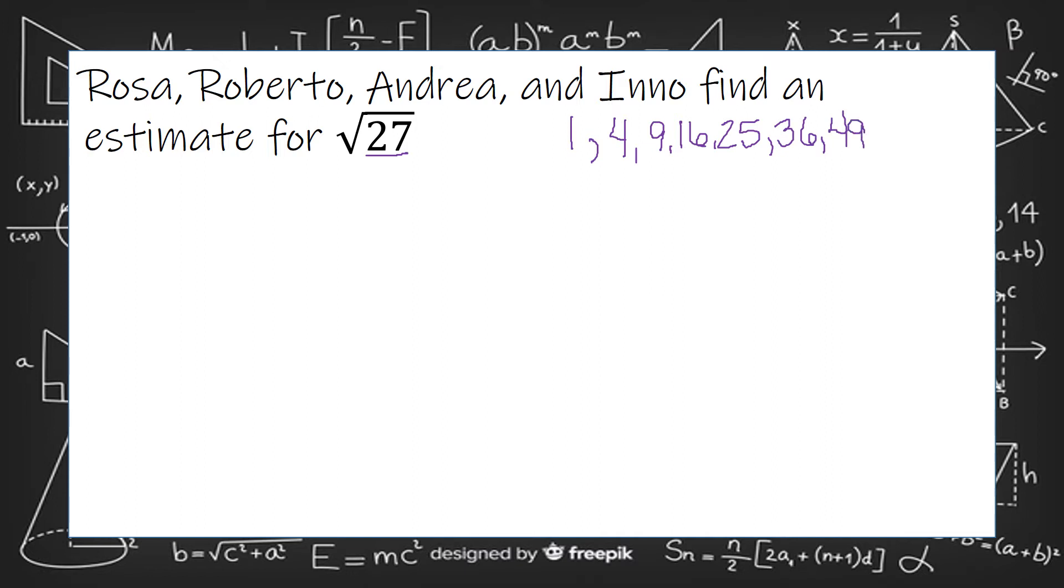6 squared is 36, 7 squared is 49. We can stop there because I see that 27 would fit right here.